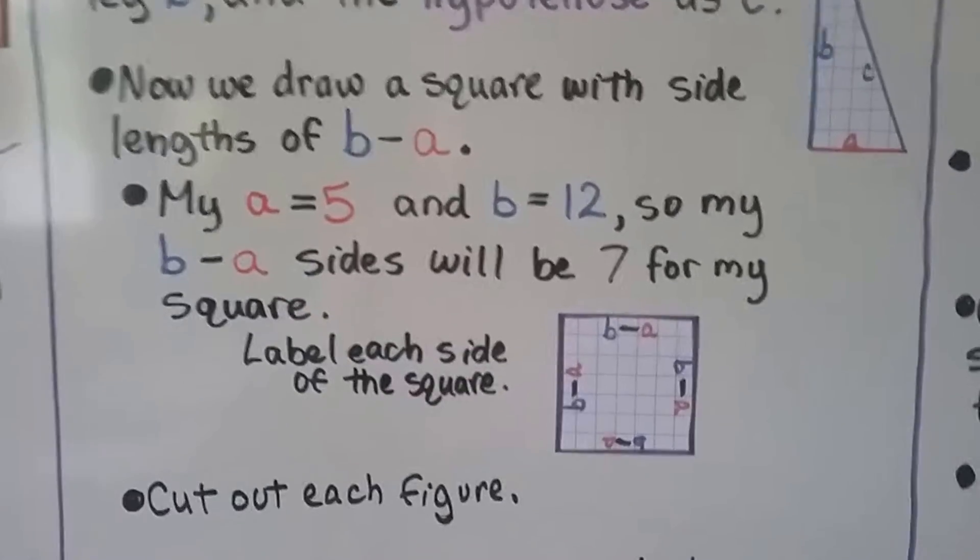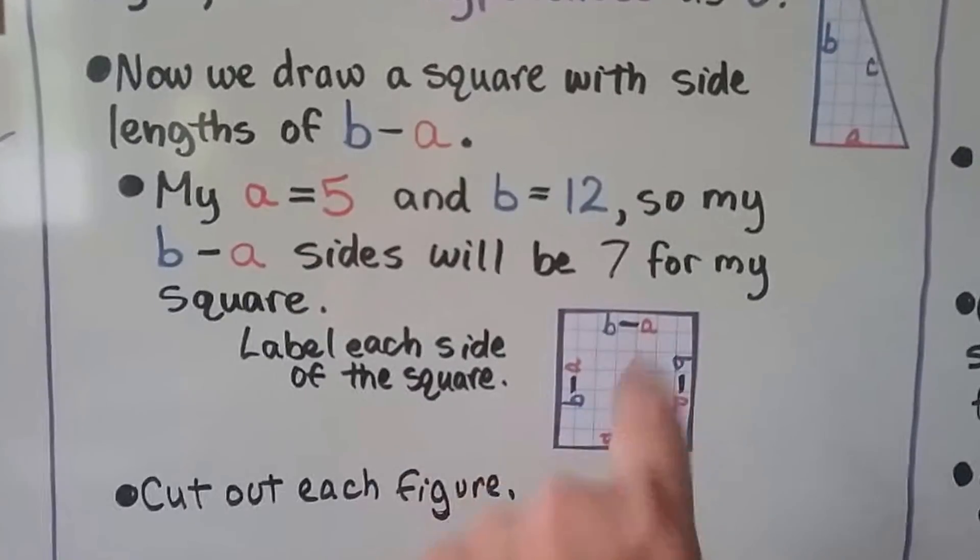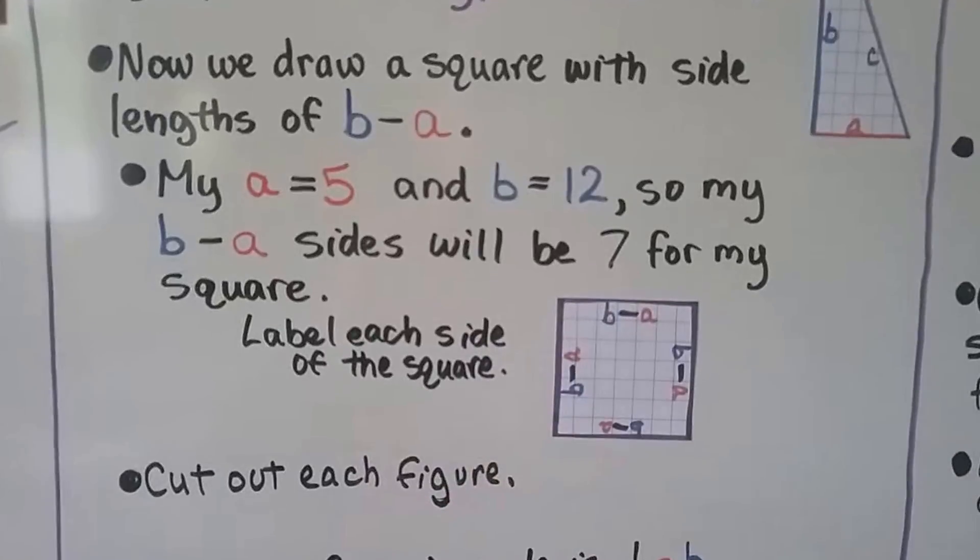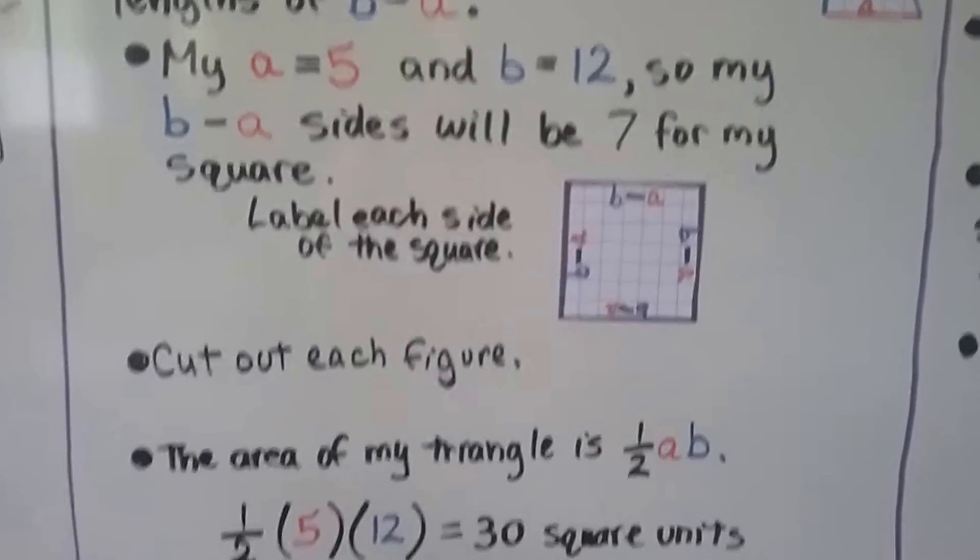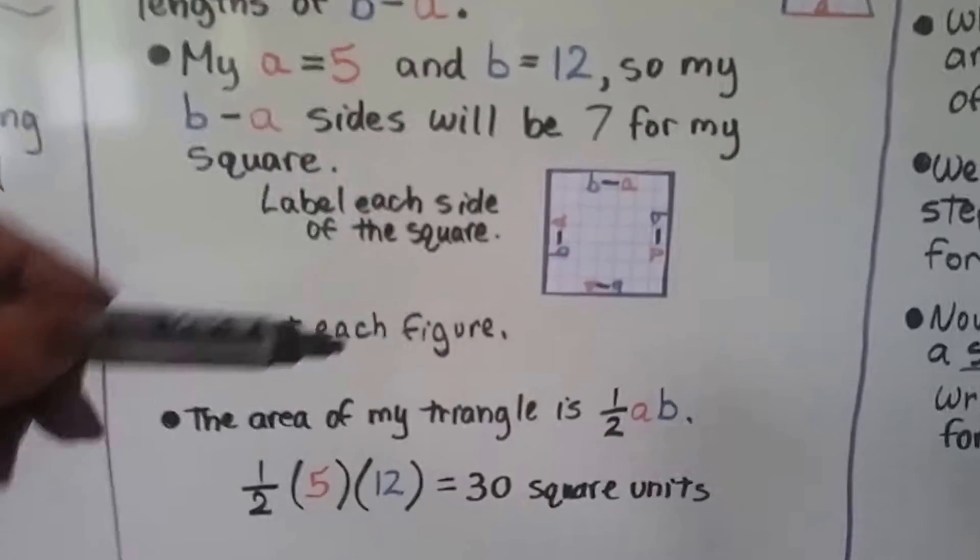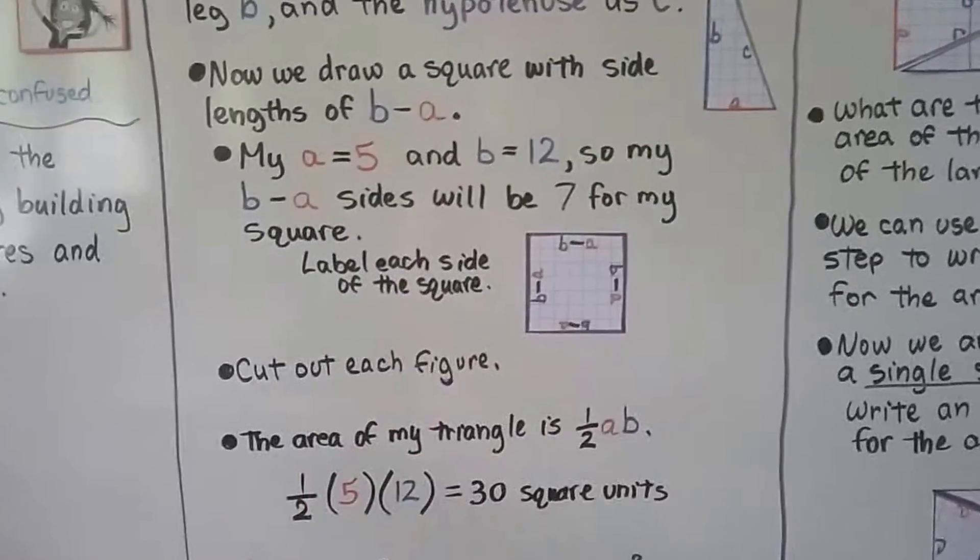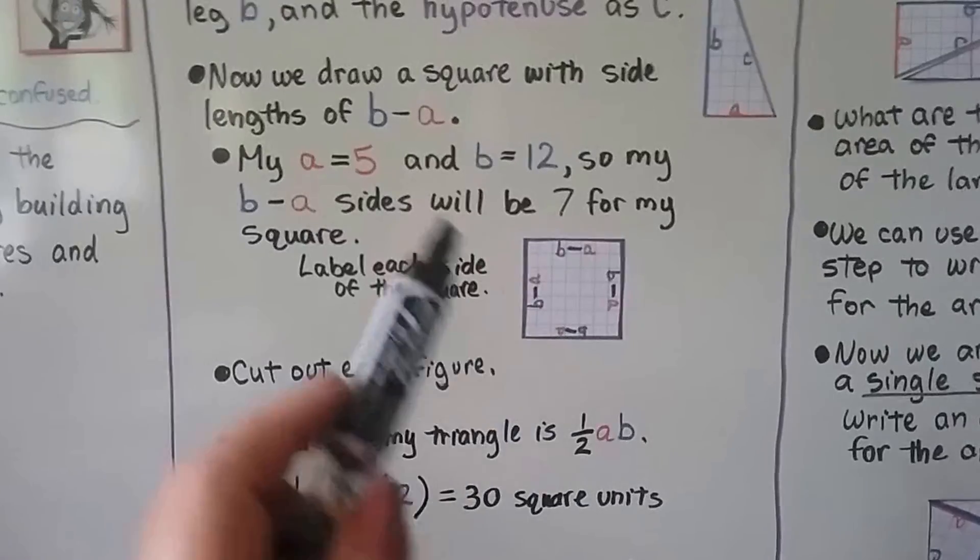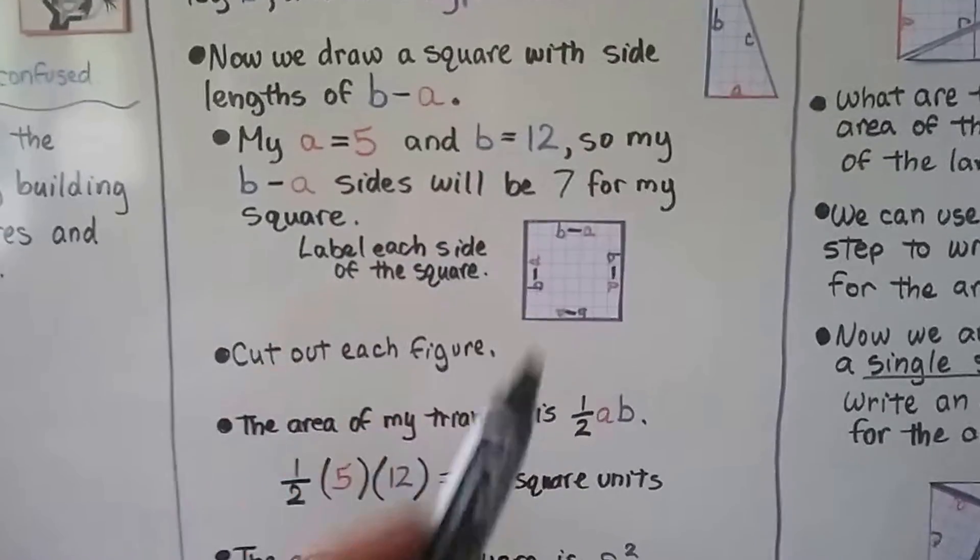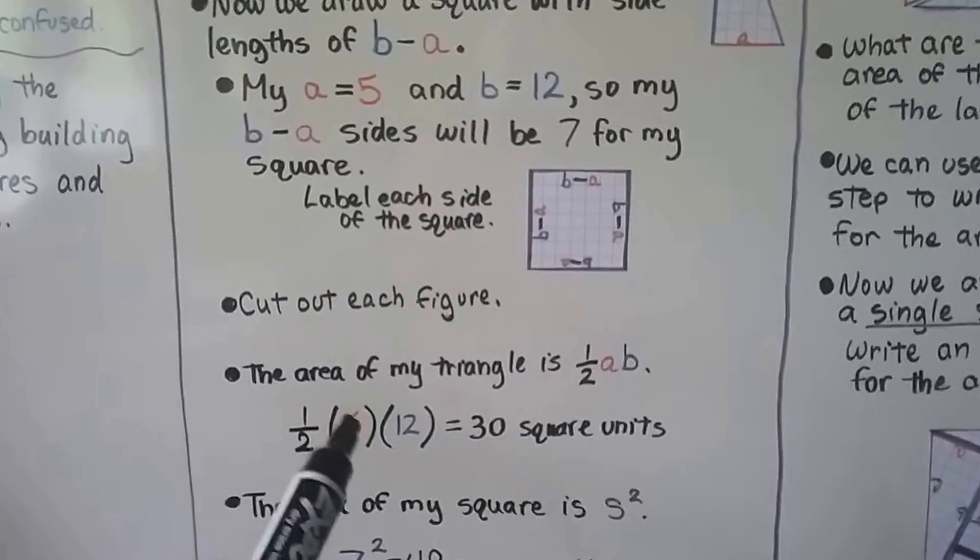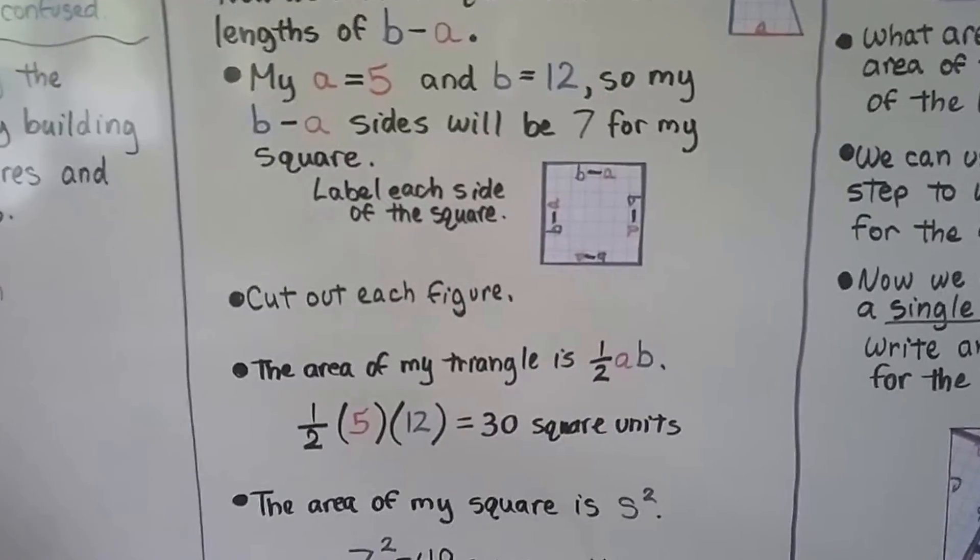We label each side of the square as b minus a. Okay, we did it all the way around. We cut out each figure. And the area of my triangle, so remember area of a triangle is half base height. So here's our base and here's our height, so it's going to be half a b. Well, if my a is a 5 and my b is a 12, it's going to be half times 5 times 12 or 30 square units.